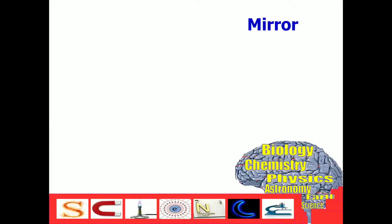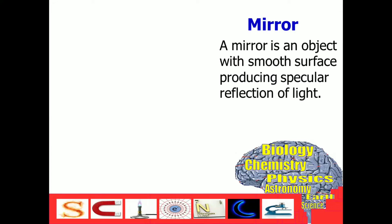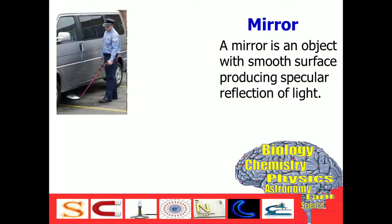Mirror is described as an object with smooth surface producing a specular reflection of light. And some examples of this are...